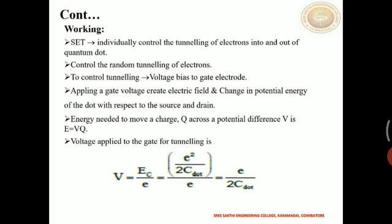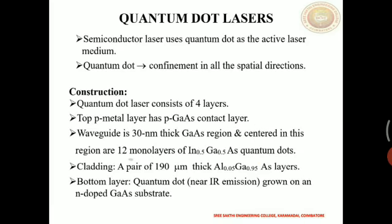A single electron transistor is nothing but a transistor which uses a single electron to transfer energy from source to drain. Next, let's discuss about quantum dot laser. We all know a semiconductor laser requires a laser medium and active atoms, and the population inversion mechanism is also used in normal lasing operation. But a quantum dot laser is a semiconductor laser that uses quantum dots as an active laser medium in its light emitting region.